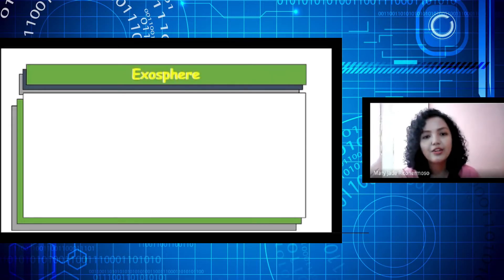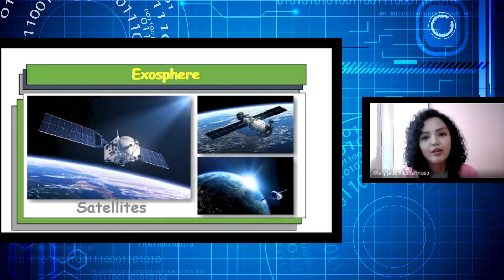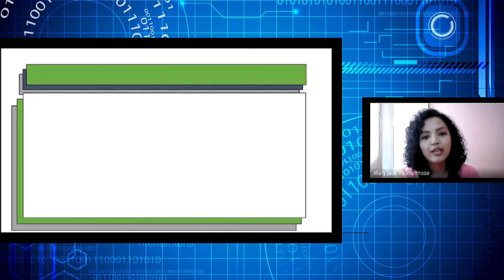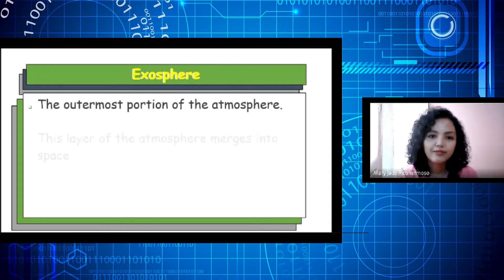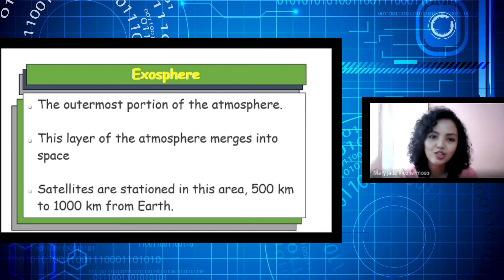The last layer is the exosphere. The outermost layer of the atmosphere. This layer of the atmosphere merges into space. Satellites are stationed in this area, 500 kilometers to 1,000 kilometers from Earth.